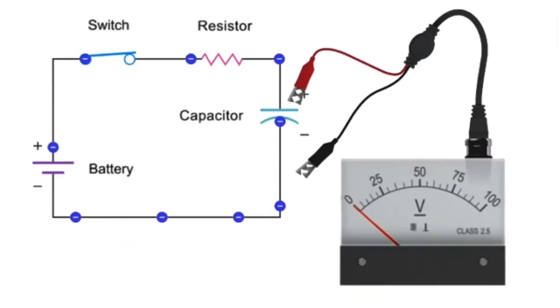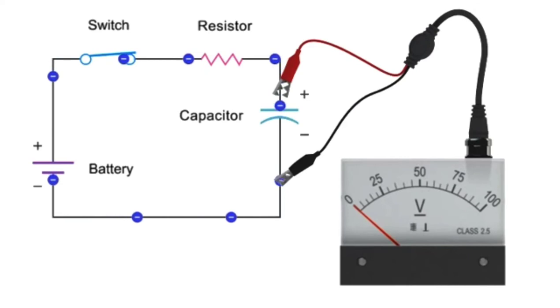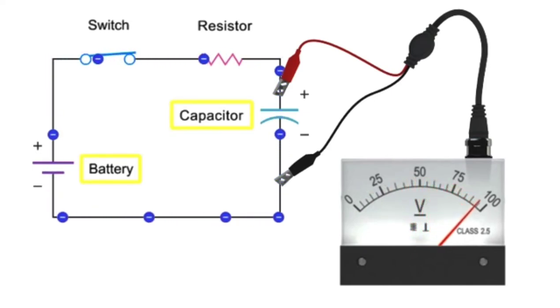Eventually, the voltage across the capacitor will equal the voltage of the source. At this point, the flow of electrons stops because the source voltage and capacitor voltage are equal but opposing each other. The capacitor is essentially charged.